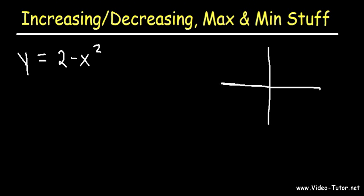This is going to be a downward parabola because we have negative x squared, but because it's plus 2, it's going to start at (0, 2). And this is just a rough sketch of the graph — it looks something like this.